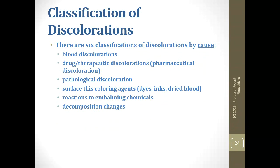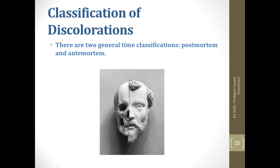There are six classifications of discolorations by cause: blood discoloration, pharmaceutical or drug/therapeutic discoloration, pathological or disease discoloration, surface discoloring agent, reaction to embalming chemicals — that includes formaldehyde gray and John's G-screen — and decomposition changes. I always want to make sure blood is taken off the body as quickly as possible when draining.